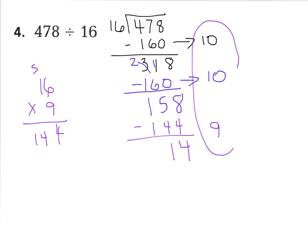So let's add this up. 10 plus 10 plus 9 is 29 with a remainder of 14. Now my remainder is kind of big, but remember, if your remainder is less than your divisor, you're done. You can't subtract 16 from 14 at all. So if we were to call this a word problem, I could have said I had 478 pieces of bubble gum I shared with 16 kids, and each kid received 29 pieces, and I had 14 left over for myself.